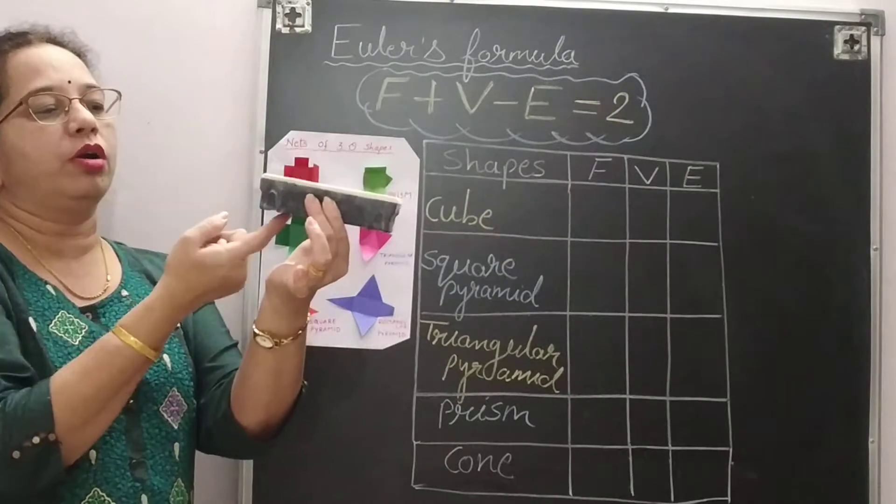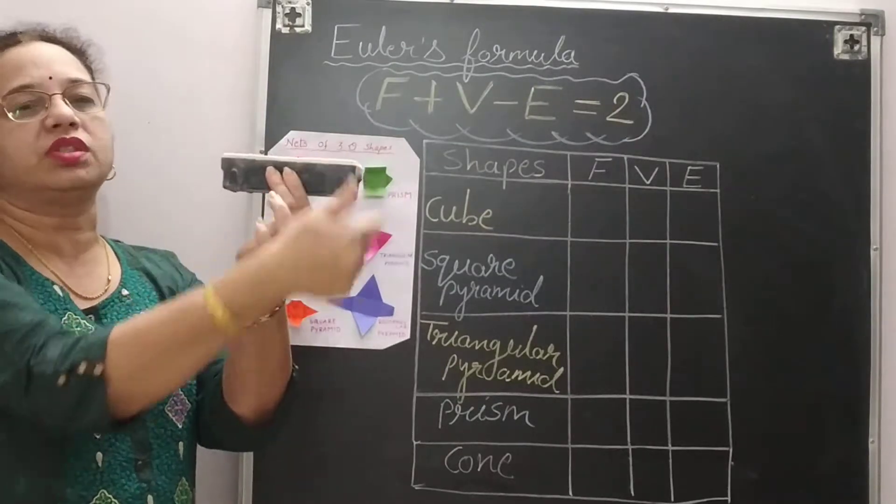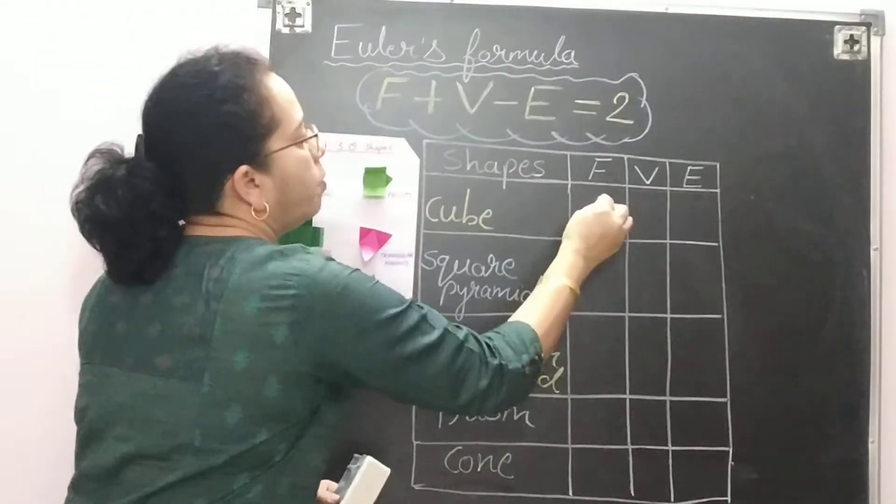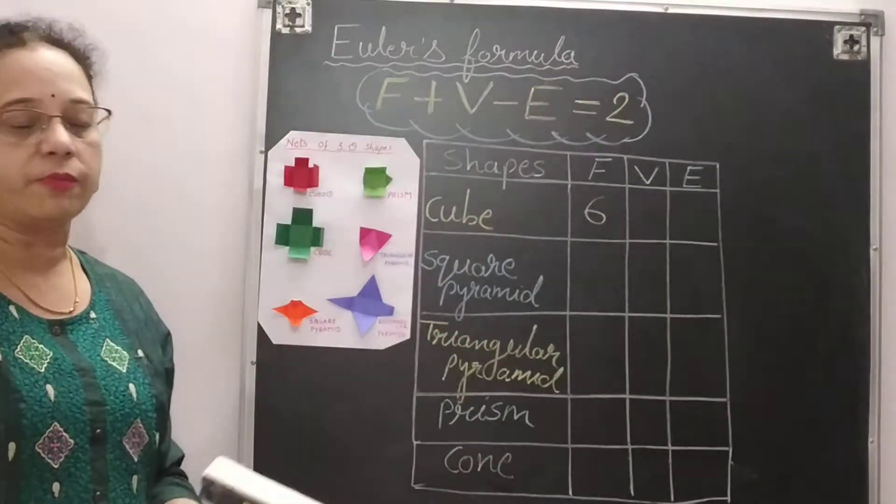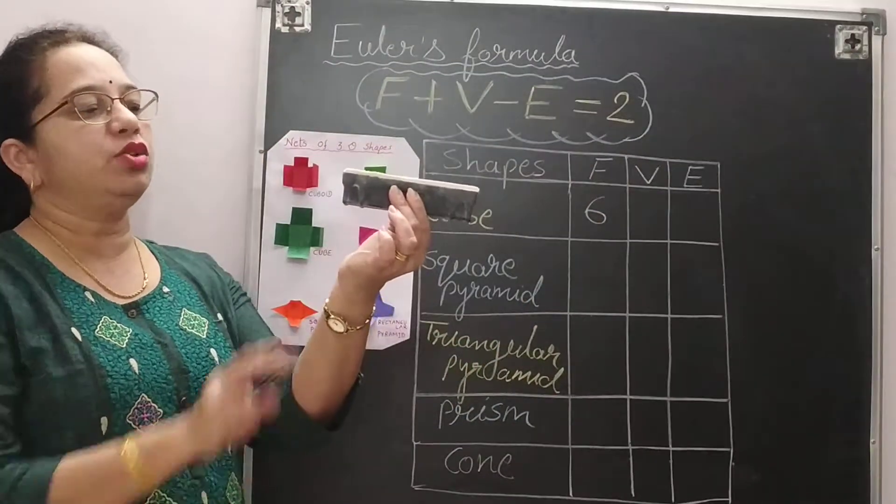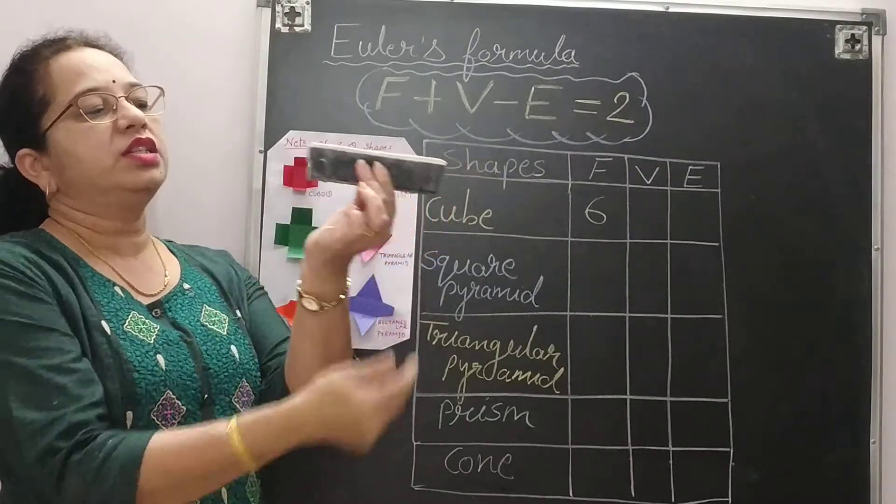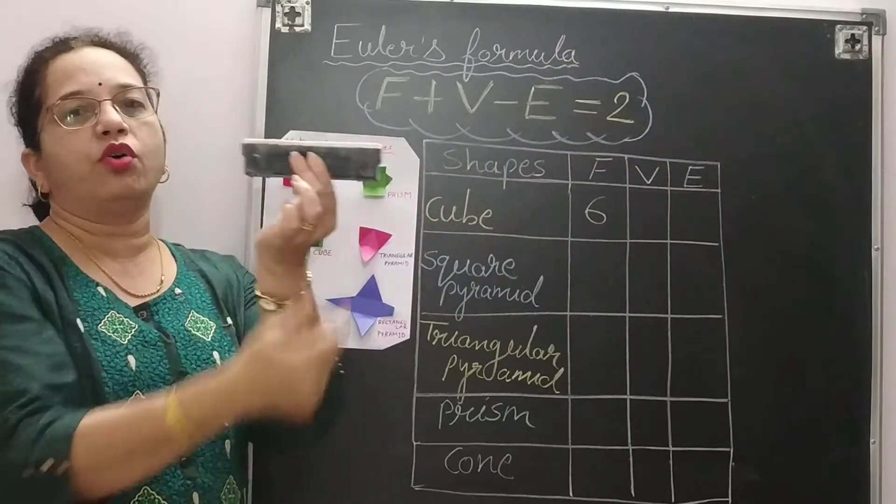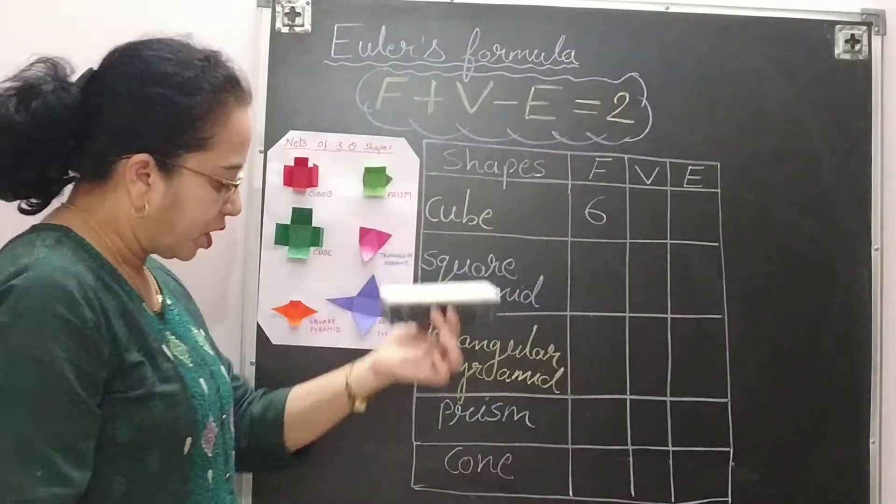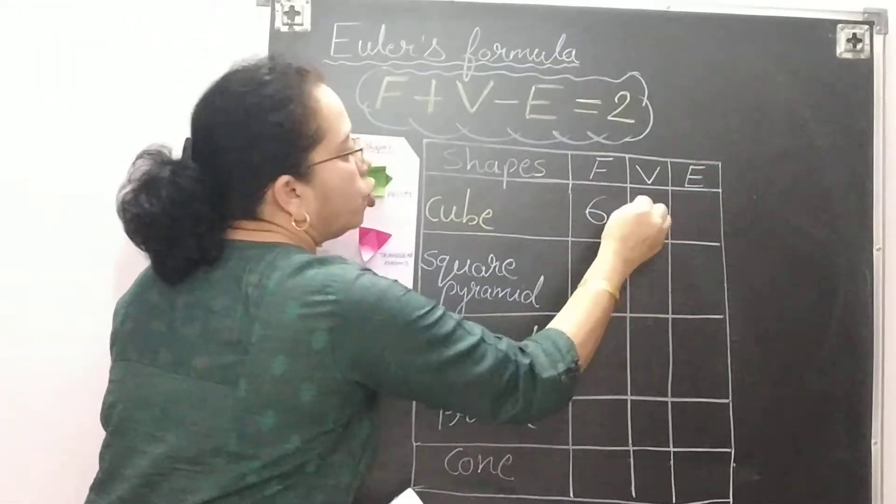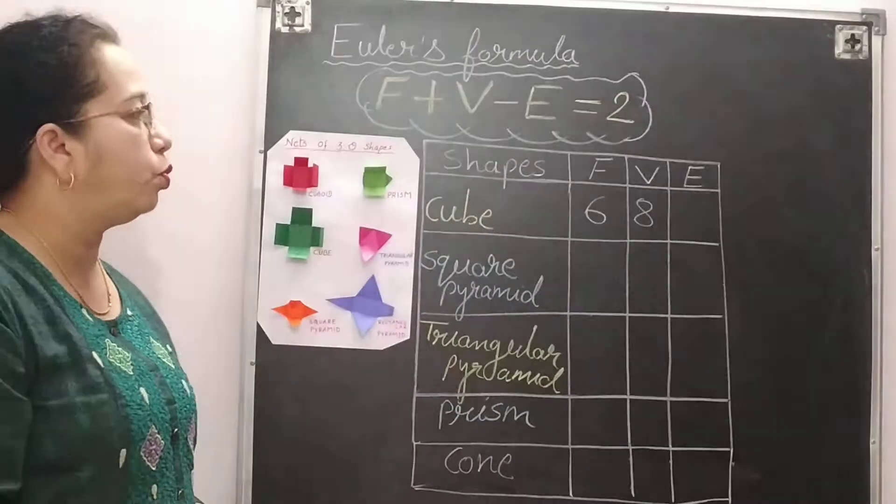So we can find out how many faces are there. Six faces: top, bottom, front, back and two side faces. So a cube and a cuboid has six faces. Now how many vertices you can see? Four vertices this side 1, 2, 3, 4. Similarly 1, 2, 3, 4. So 4 plus 4, we have 8 vertices in a cube and also in cuboid.